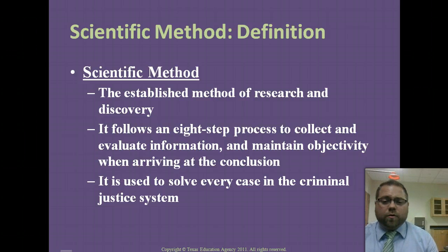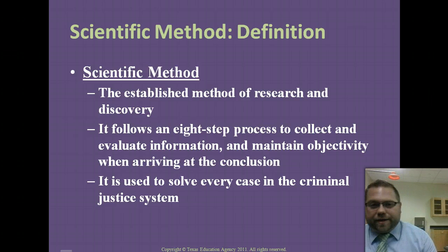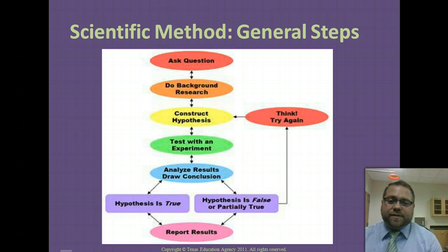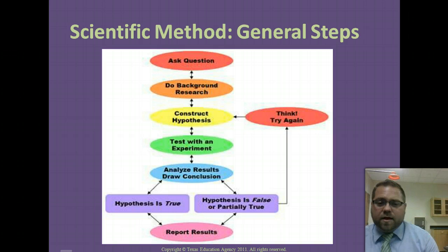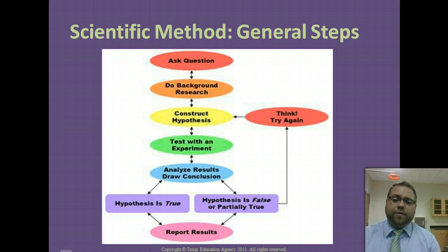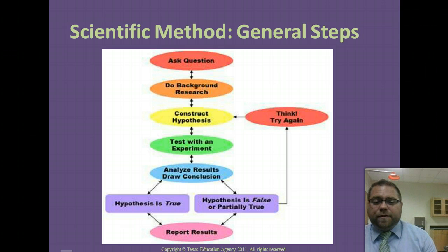The scientific method is an orderly process to keep us in check when doing a scientific experiment so that our own personal bias doesn't creep in — though it still does a lot of times. Here are the eight steps: ask a question, do research, construct a hypothesis, test it with an experiment, analyze results and draw a conclusion. If your hypothesis is true, report the results; if it's false, start back over. And even if it's true, you still want to repeat it, because science has to be repeatable.